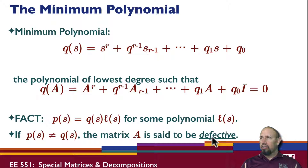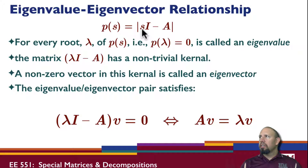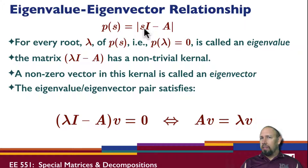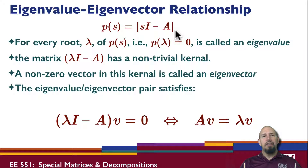So we look at the different situations and the concept of a defective matrix. Every root lambda of the polynomial is called an eigenvalue. An eigenvalue is a value such that if I plug in lambda, the matrix lambda I minus A has zero determinant. The fundamental theorem of algebra says an nth order polynomial has n roots — so this nth order characteristic polynomial is going to have n eigenvalues.